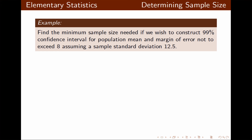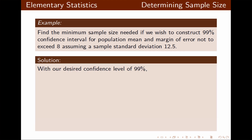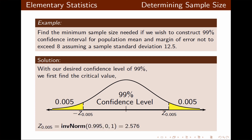In this example, we need to find the minimum sample size needed if we wish to construct a 99% confidence interval, with margin of error not to exceed 8, assuming a sample standard deviation of 12.5. First, we find the critical value for a confidence level of 99% by using inverse norm with left area of 0.995; our critical value is 2.576.